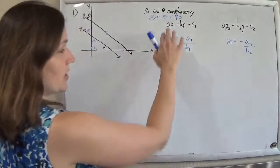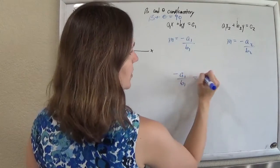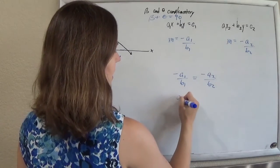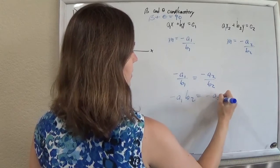I forgot the a1 there. So just solve them for y. And so then you can say that the slopes are the same, and if you do your cross multiplication, negative a1 over b2 will equal negative a2 over b1.